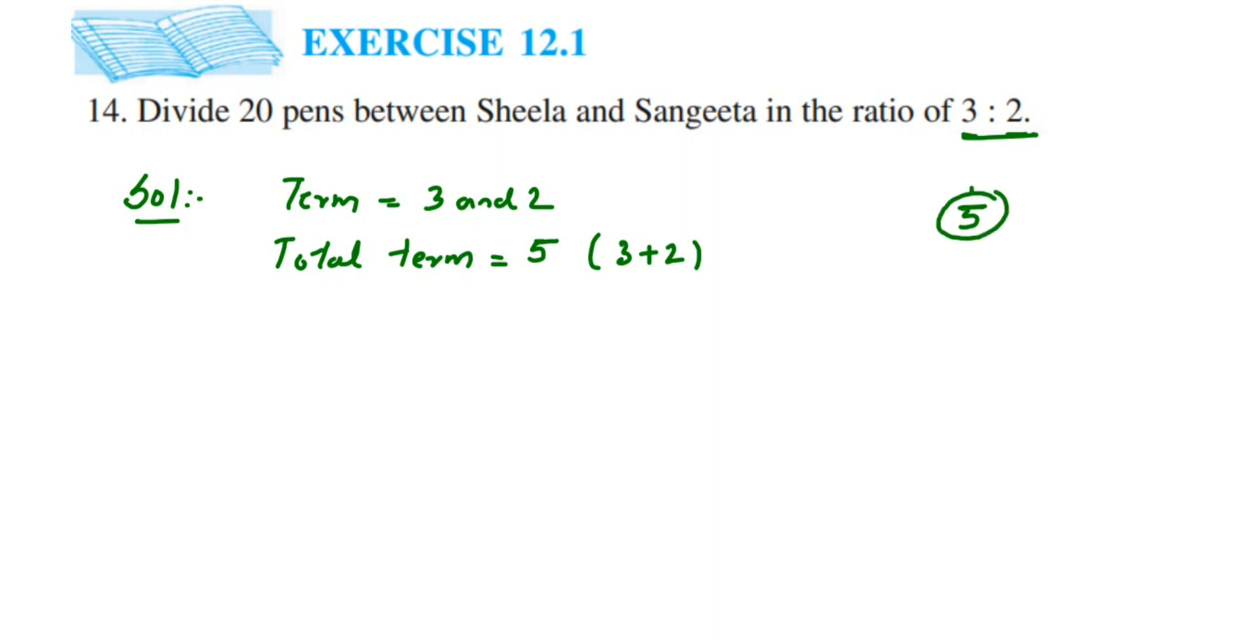This is what the ratio is. Like how we do in a fraction, we have a whole thing, out of that whole, some part goes to something, right? So here also, total is 5, out of this 5, 3 goes to Sheela and 2 goes to Sangeeta.